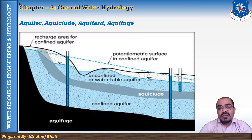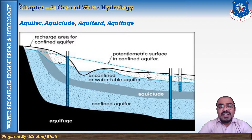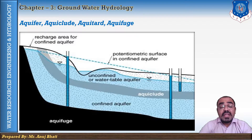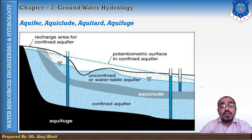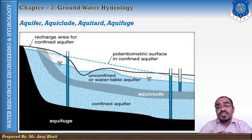Next, what is aquiclude? This may be defined as a geological formation of relatively impermeable material which permits storage of water but is not capable of transmitting water in sufficient quantity — for example, clay.